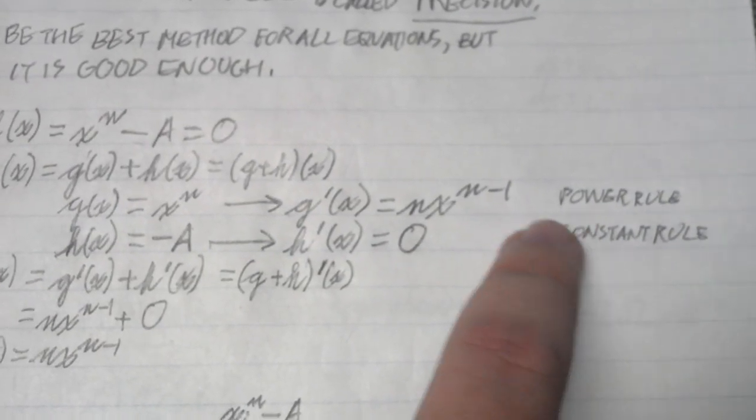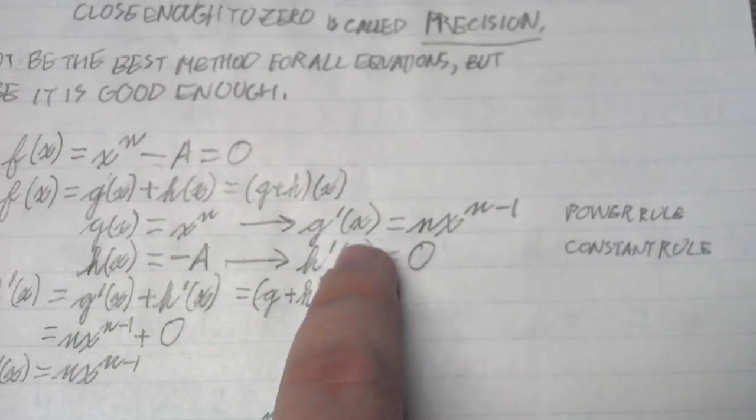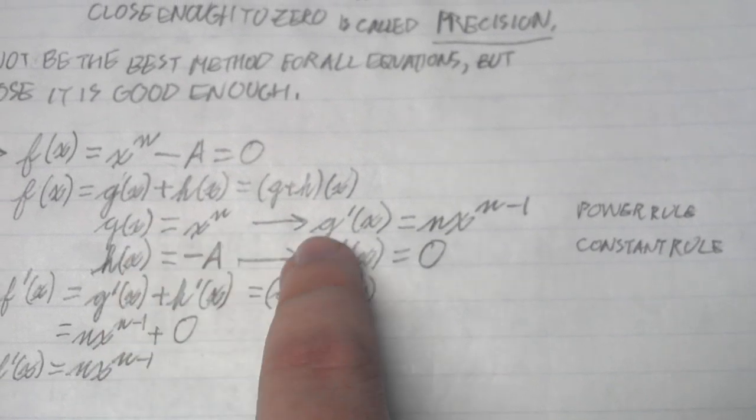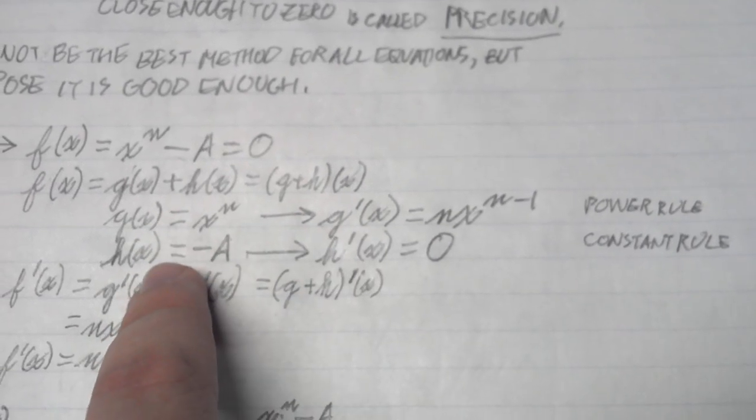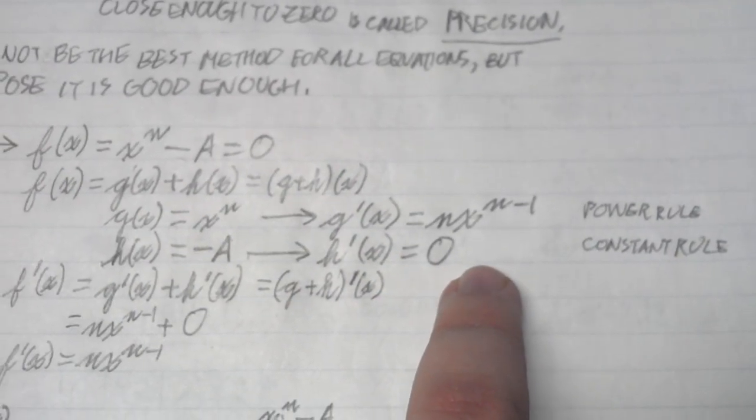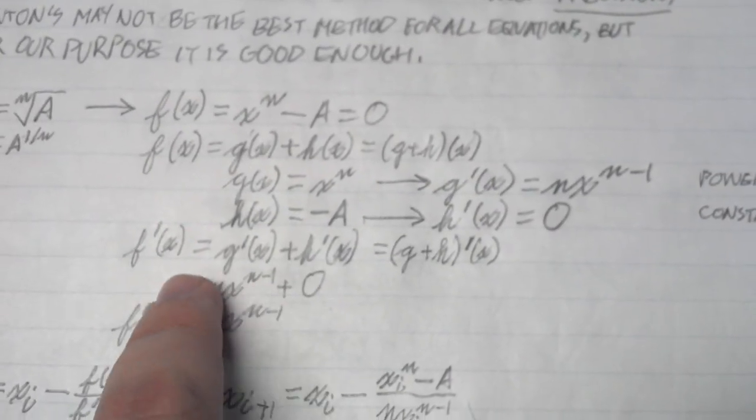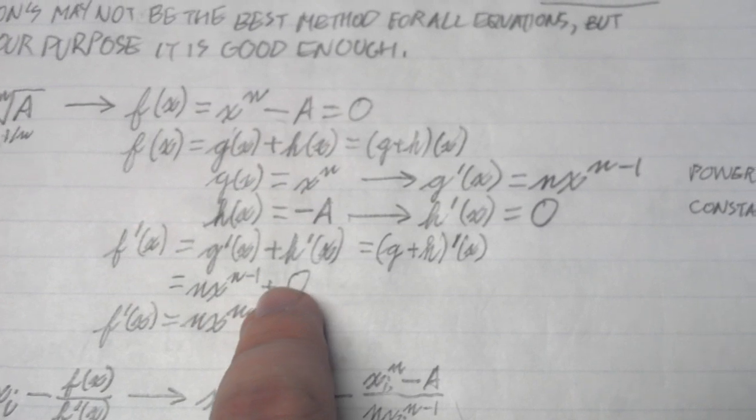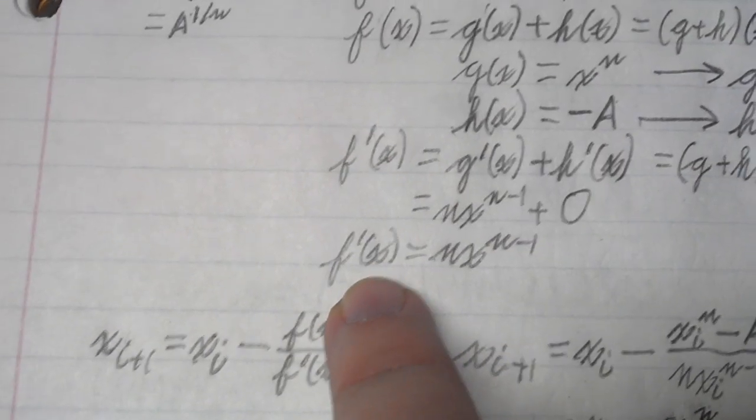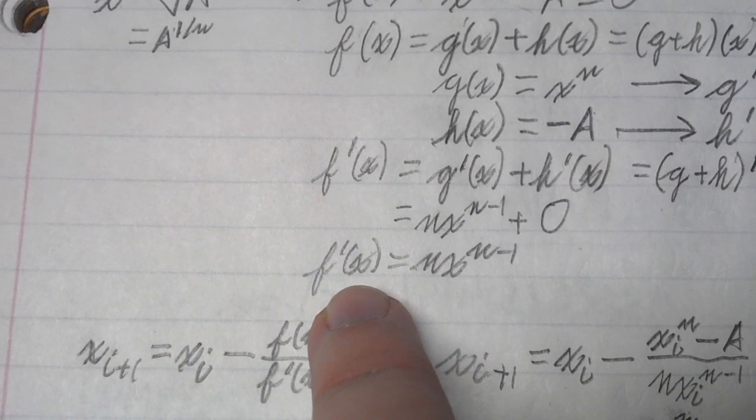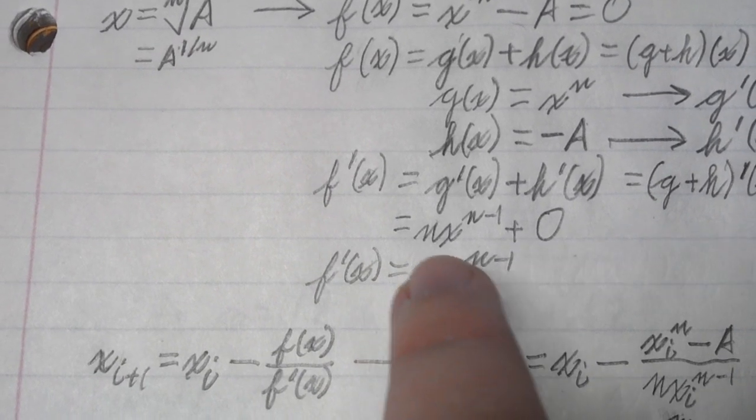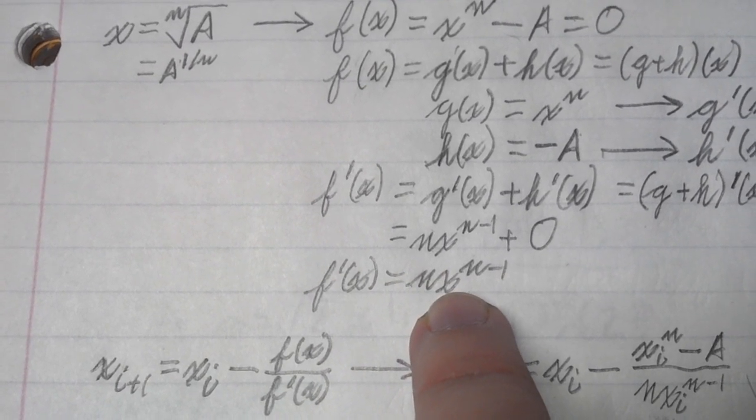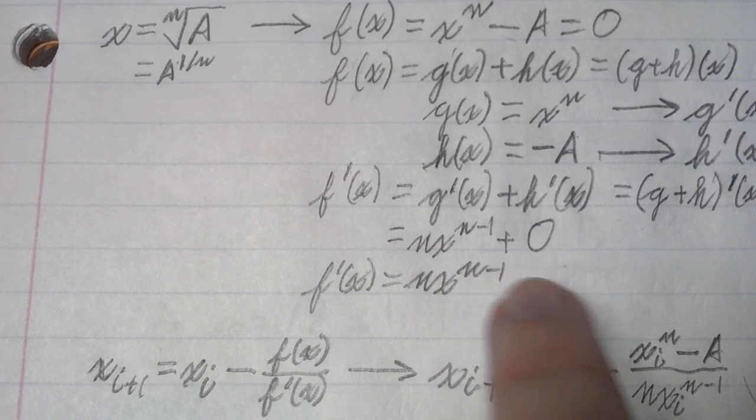We take our first part and apply the power rule to it. Then we take the second half and apply the constant rule. Since we can add these two derivatives together, we get our final derivative: f'(x) = nx^(n-1).